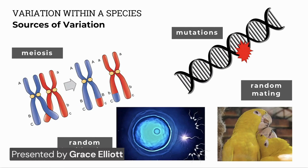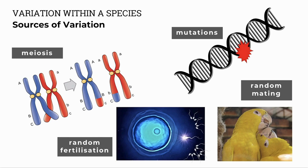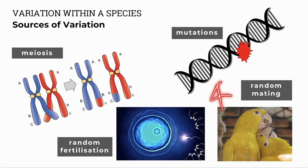There are a number of sources of variation that cause change within species. One: meiosis, including crossing over and random arrangement of chromosomes on the equator. Two: mutations in DNA, whether they're positive, negative or neutral. Three: random fertilization — which sperm will fuse with which egg. Four: random mating — the selection of mating partners leads to variation and changes in the gene pool of a population.